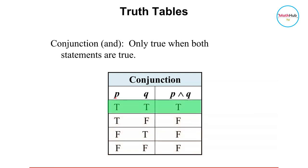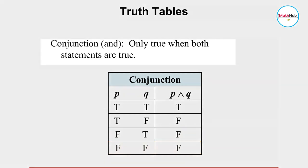We have T and T, so P and Q are both true — the conjunction is true. If P is true and Q is false, the statement is false. If P is false and Q is true, the conjunction statement is false. If both statements are false, the conjunction statement is also false. To remember this: conjunction is only true when both statements are true.